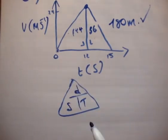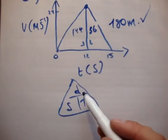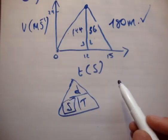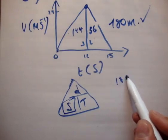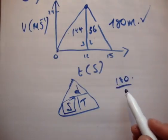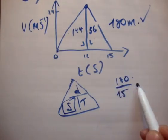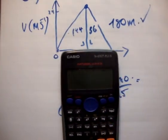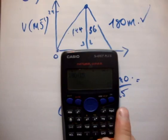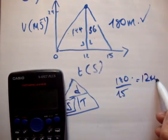And to get the average, you use total distance over total time. So to get the average speed, we say it's the total distance of 180 meters divided by the total time, which is 15 seconds, giving us 12 meters per second.